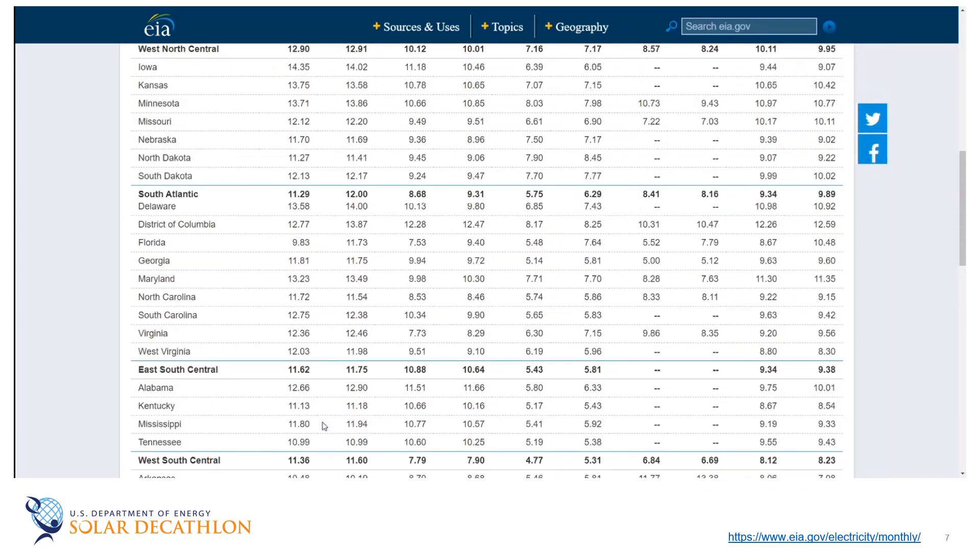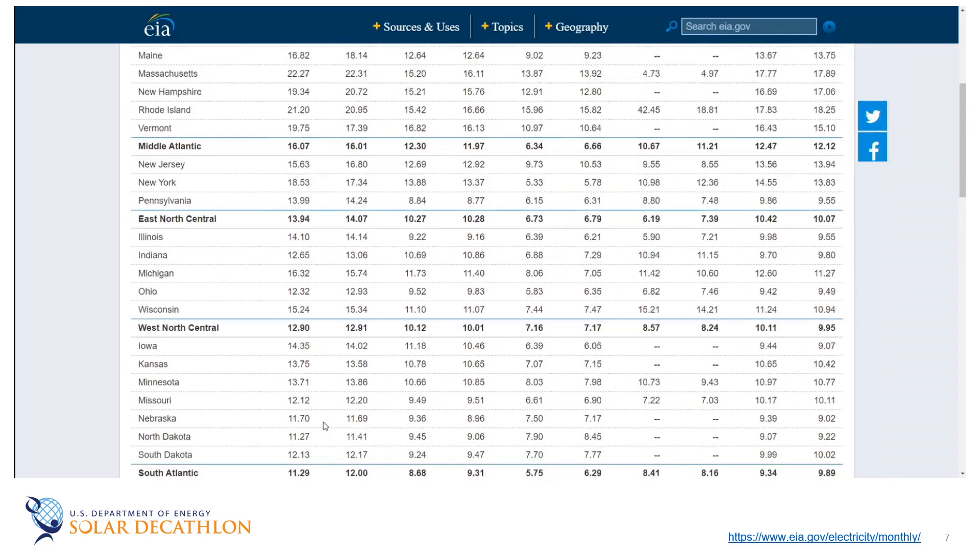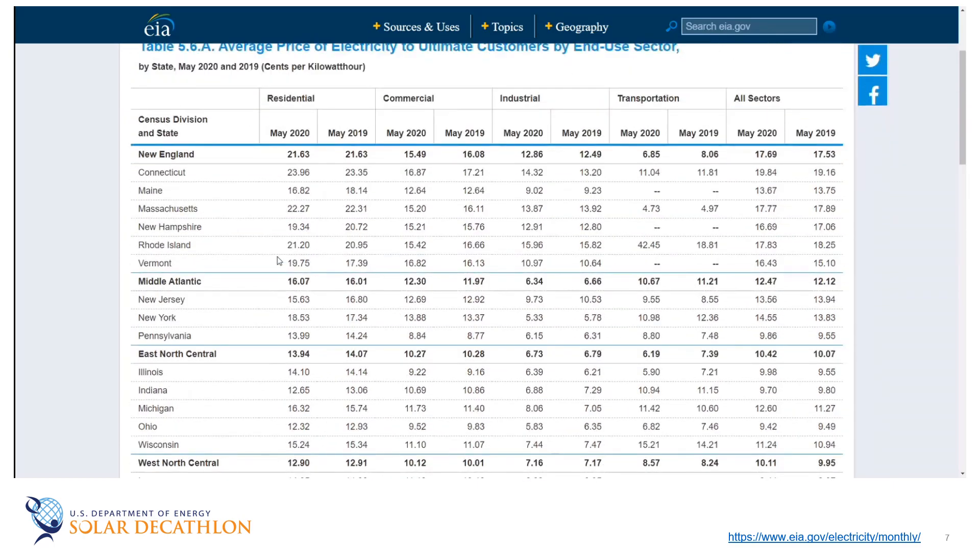So as we look at some of this, let's pick one state. We'll go back up to the top here and pick Rhode Island. That if we want to talk about the cost of energy, we're going to use this number, 21.20 cents per kilowatt hour, in some examples that we're going to work here shortly.